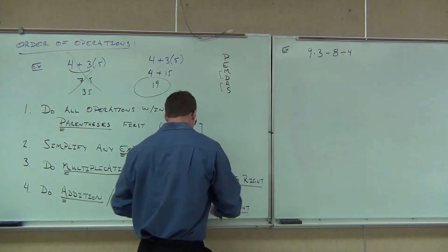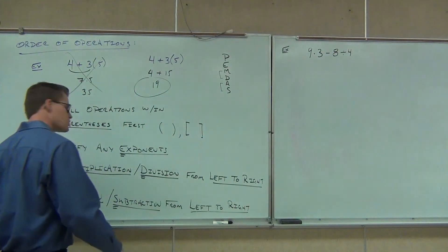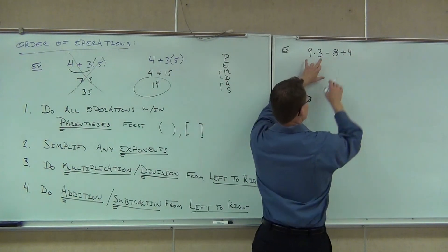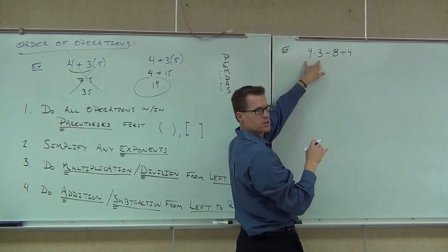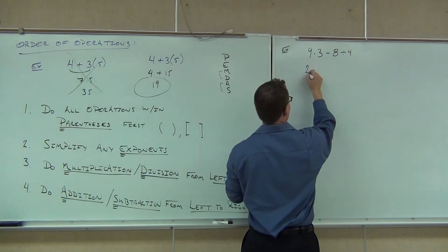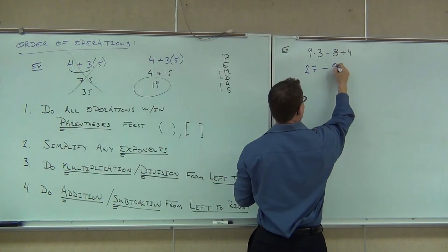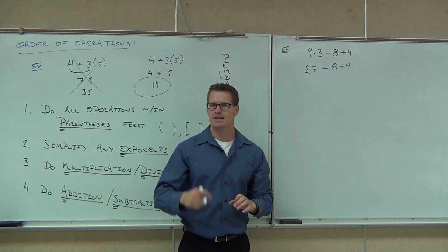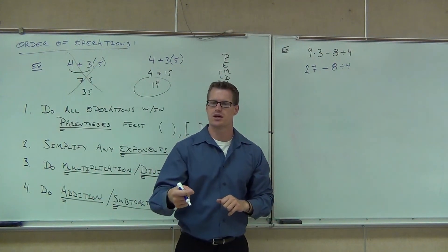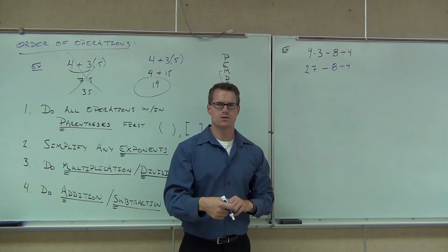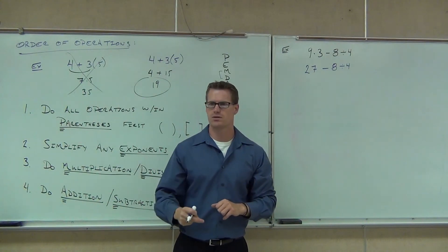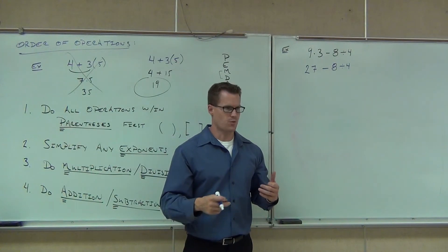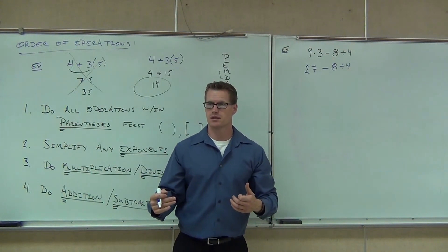What comes first from left to right — the multiplication or the division? Multiplication. So we're going to multiply and ignore the rest of it for now. How much is nine times three? Twenty-seven. We rewrite the rest of our problem. We do it piece by piece, because at this stage in your math careers, piece by piece is the way to go. Later on you can do multi-steps at once, but for right now it's piece by piece.